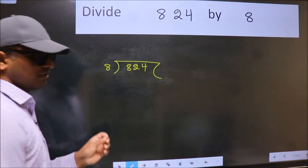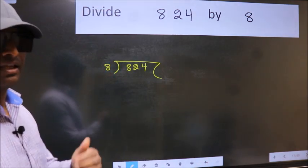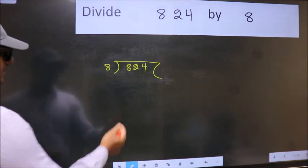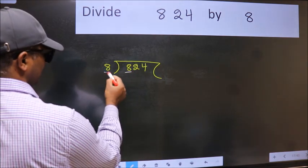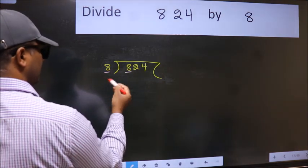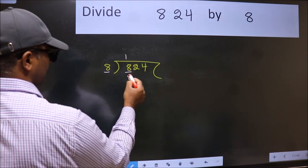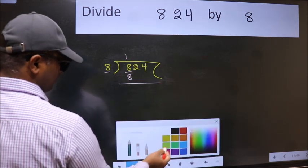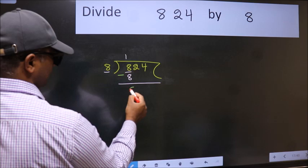This is step 1. Next, here we have 8 and here 8. When do we get 8 in the 8 table? 8 once is 8. Now we subtract. We get 0.